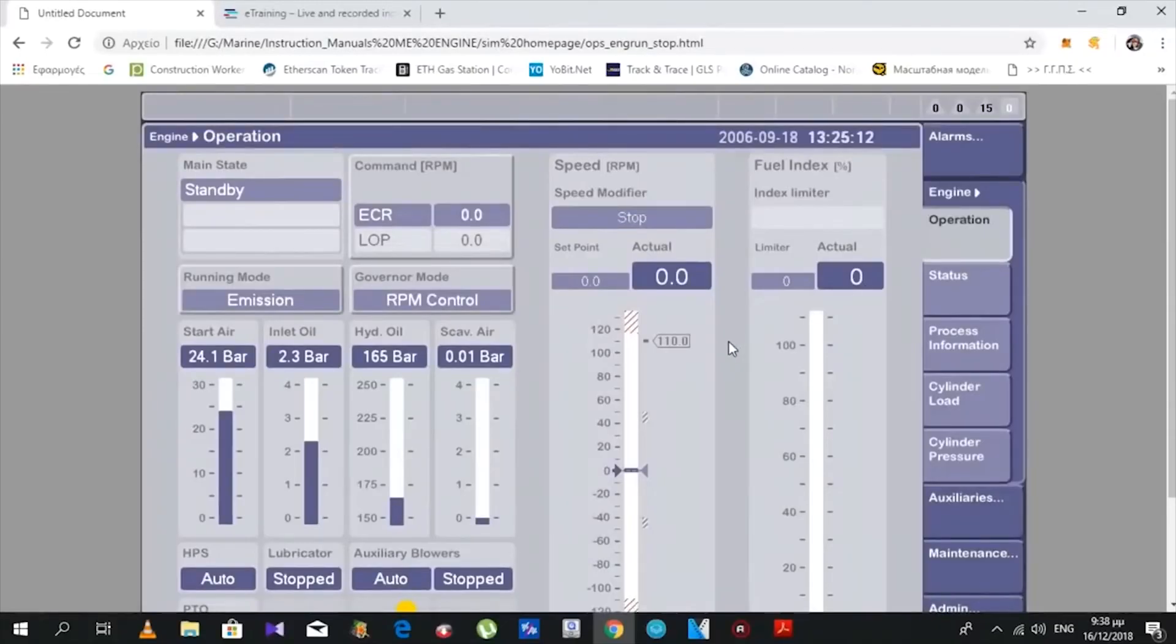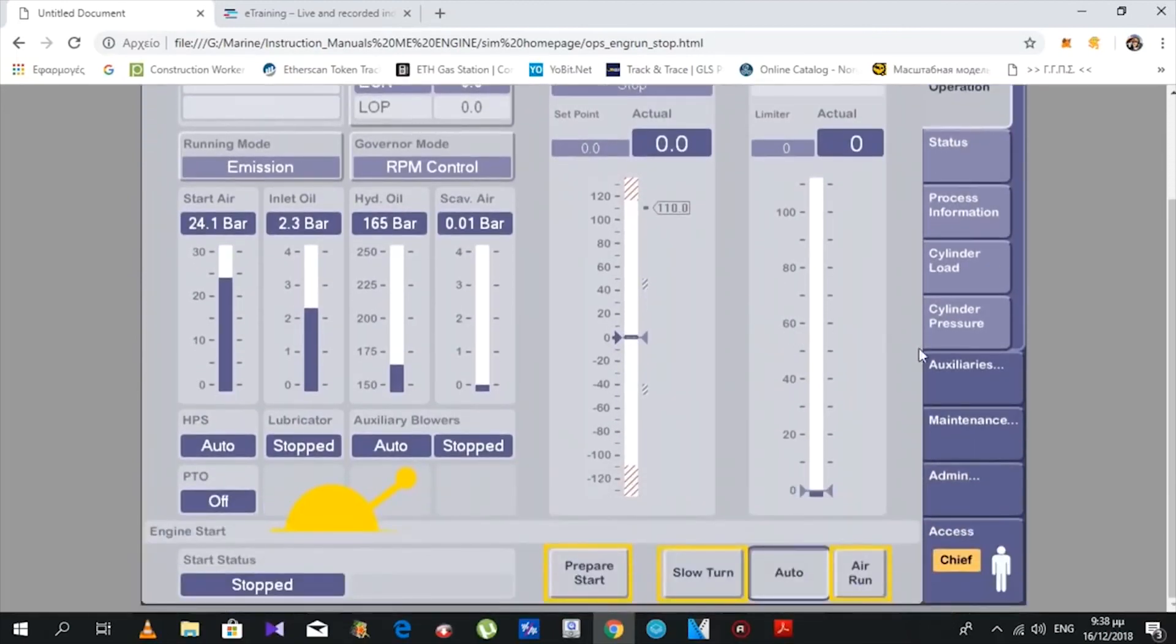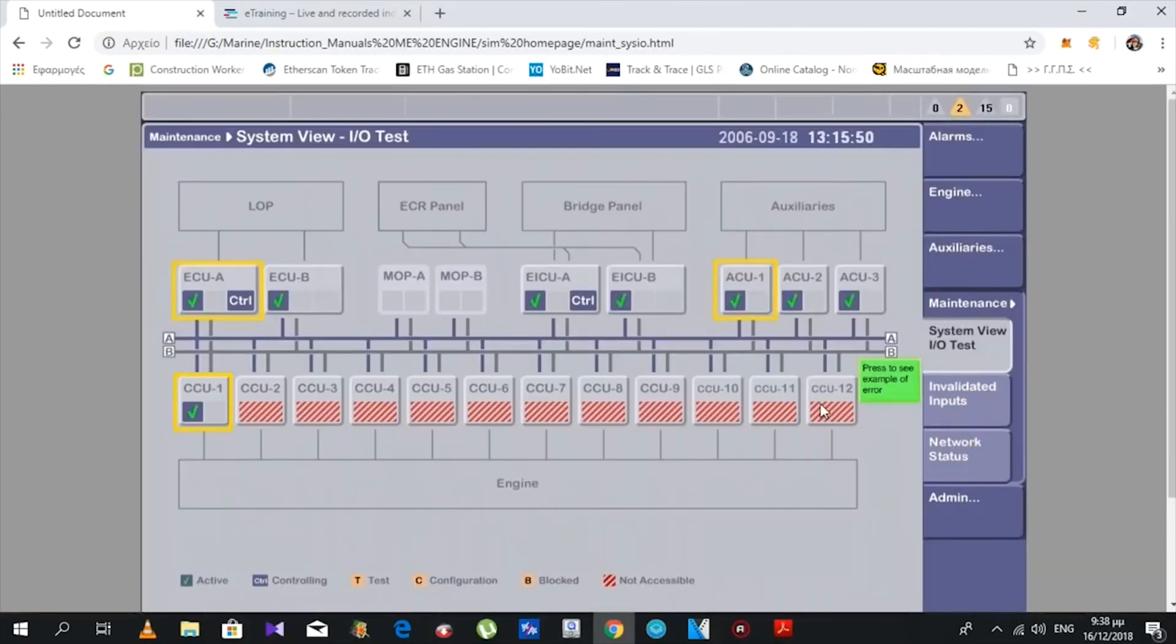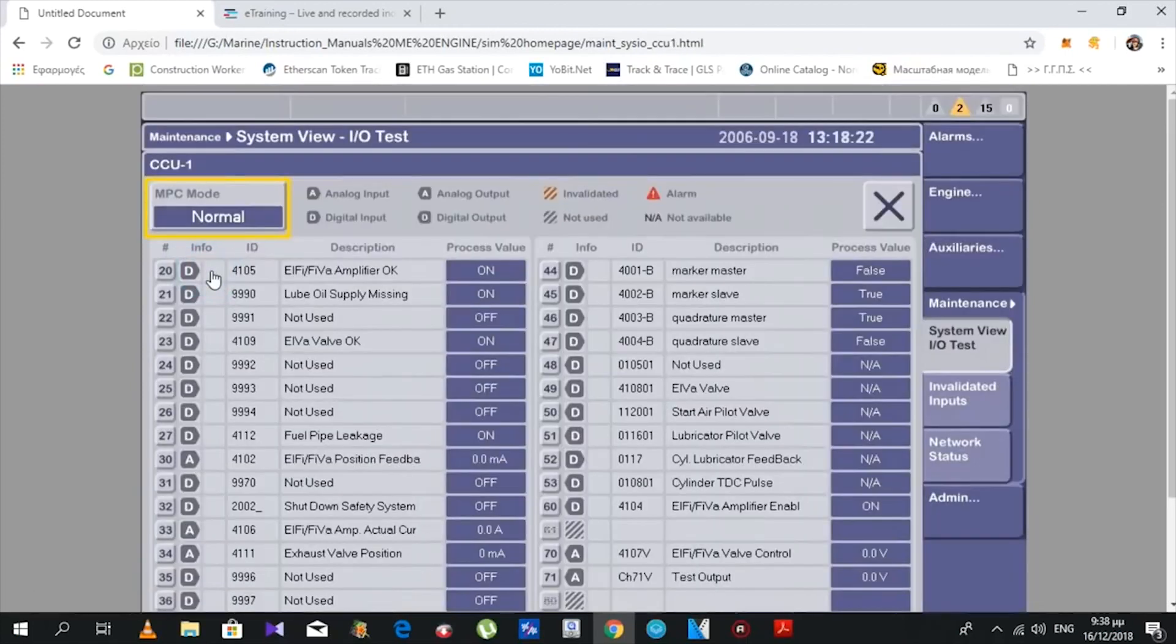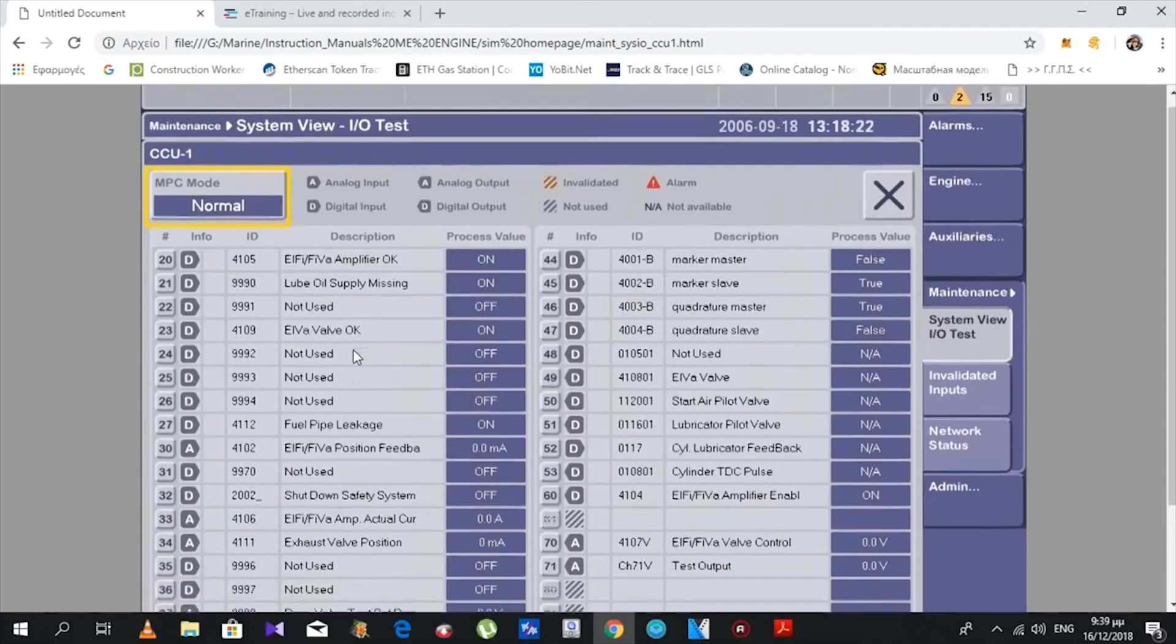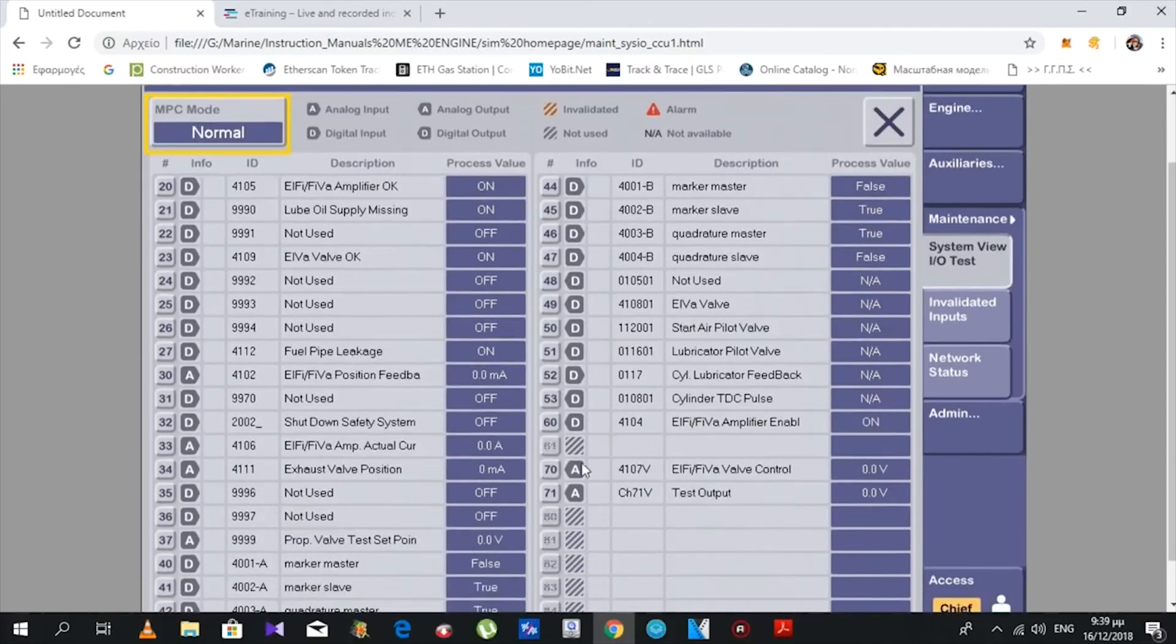Another thing we can see from our MOP monitor here—the same thing we see inside the engine control room. We go to CCU and see it working in normal condition. Here is our channel 70 that I told you about, which controls the FIVA valve.